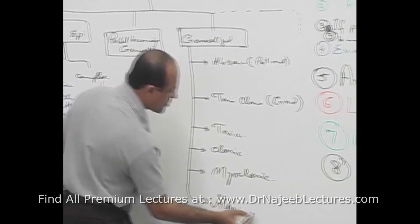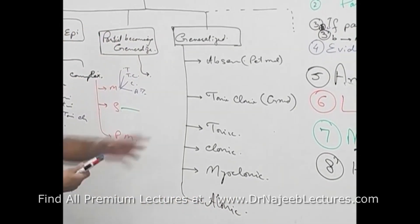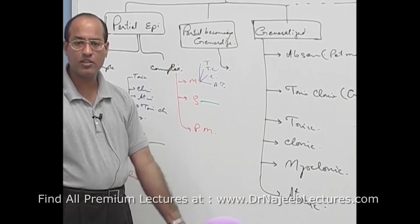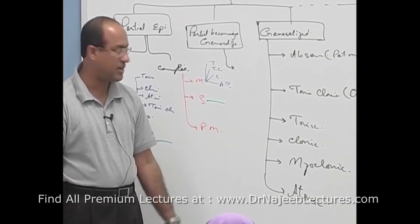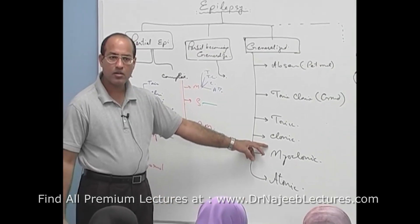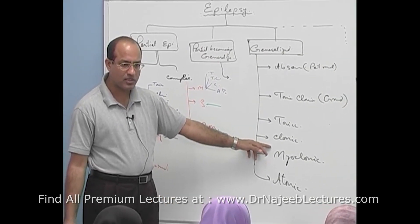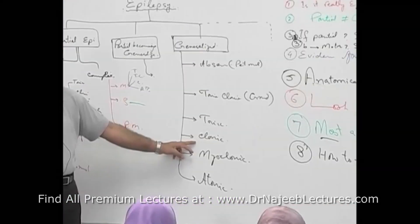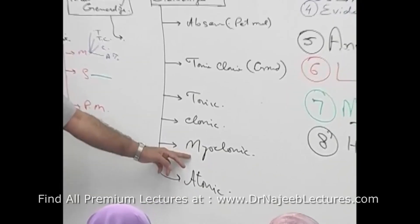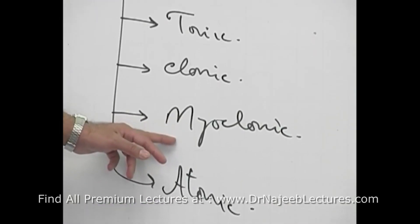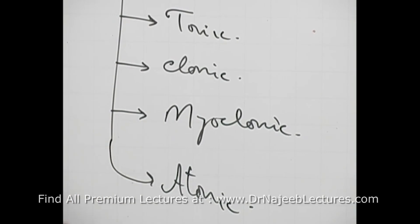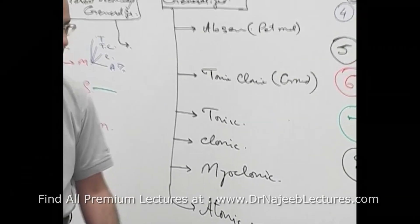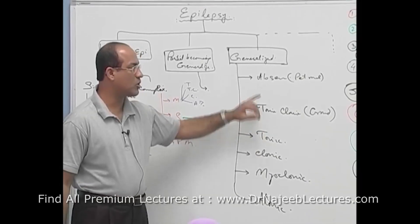I will go into detail of the first two cases — the last ones are very easy. In tonic, the patient's body stiffens and then becomes normal. In clonic, both halves of the body jerk and then the patient becomes normal. In myoclonic, one muscle or one group of muscles abnormally jerks and then the person becomes normal. In atonic, all the body loses tone and then the patient becomes normal. We will go into detail of tonic-clonic and absence.